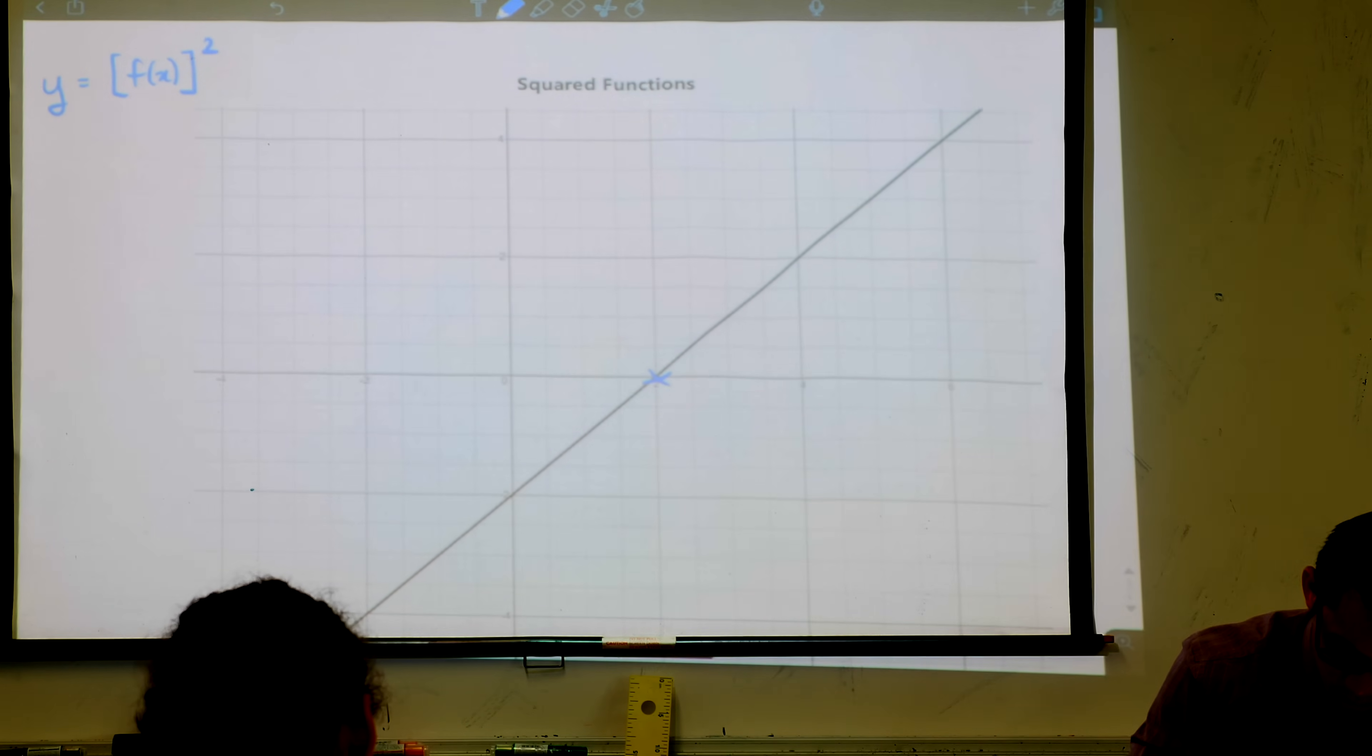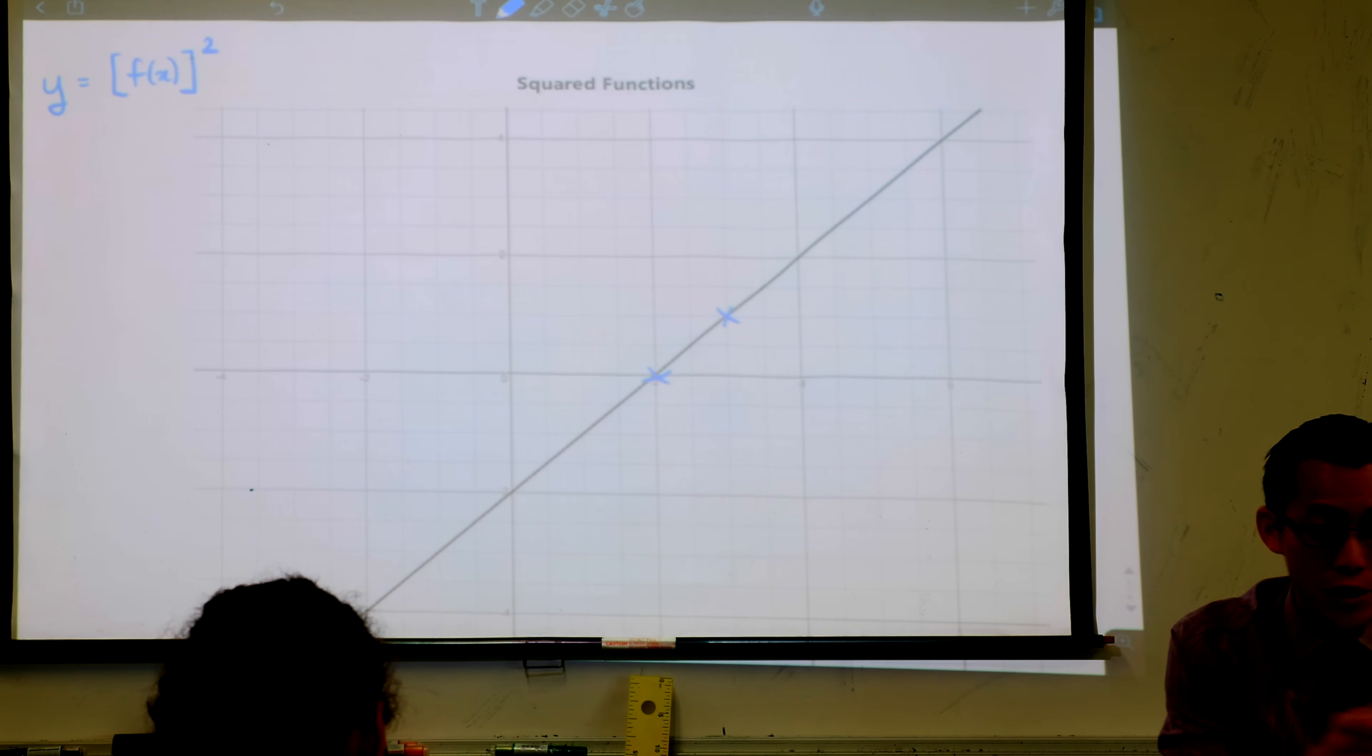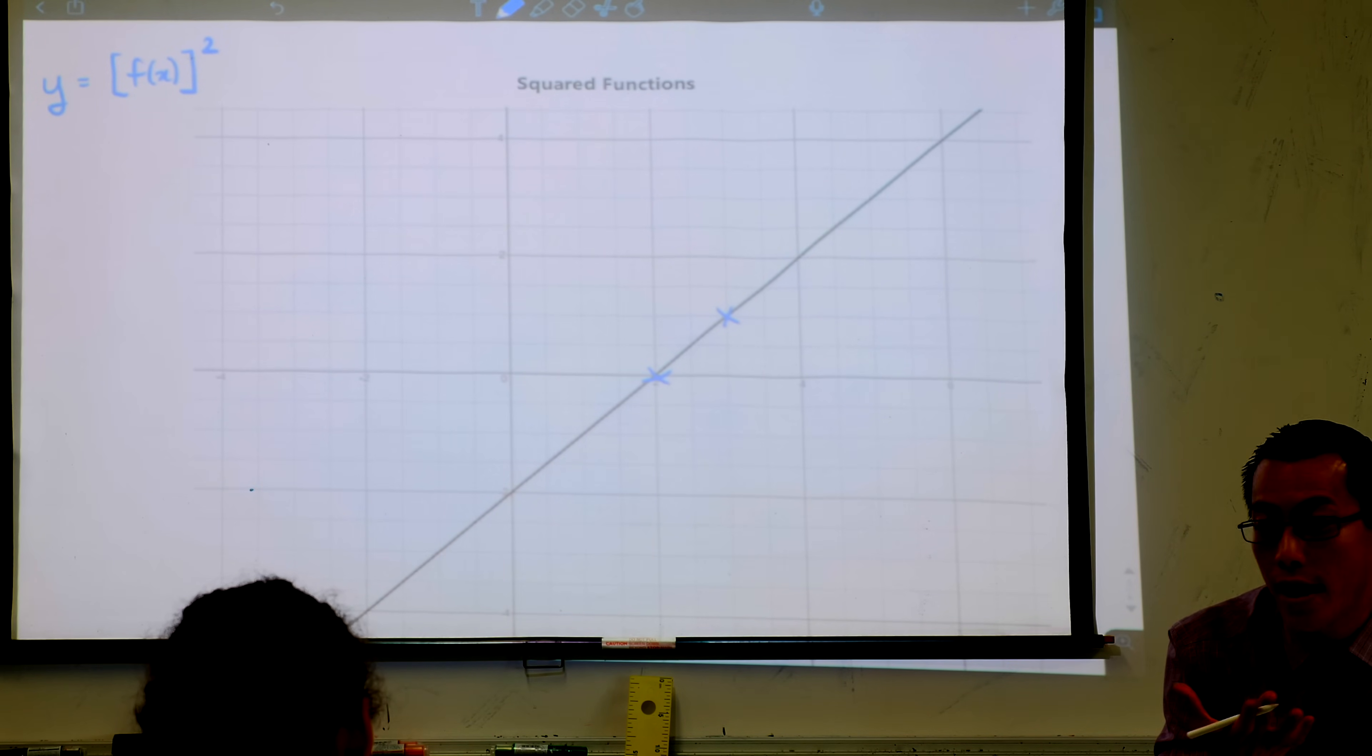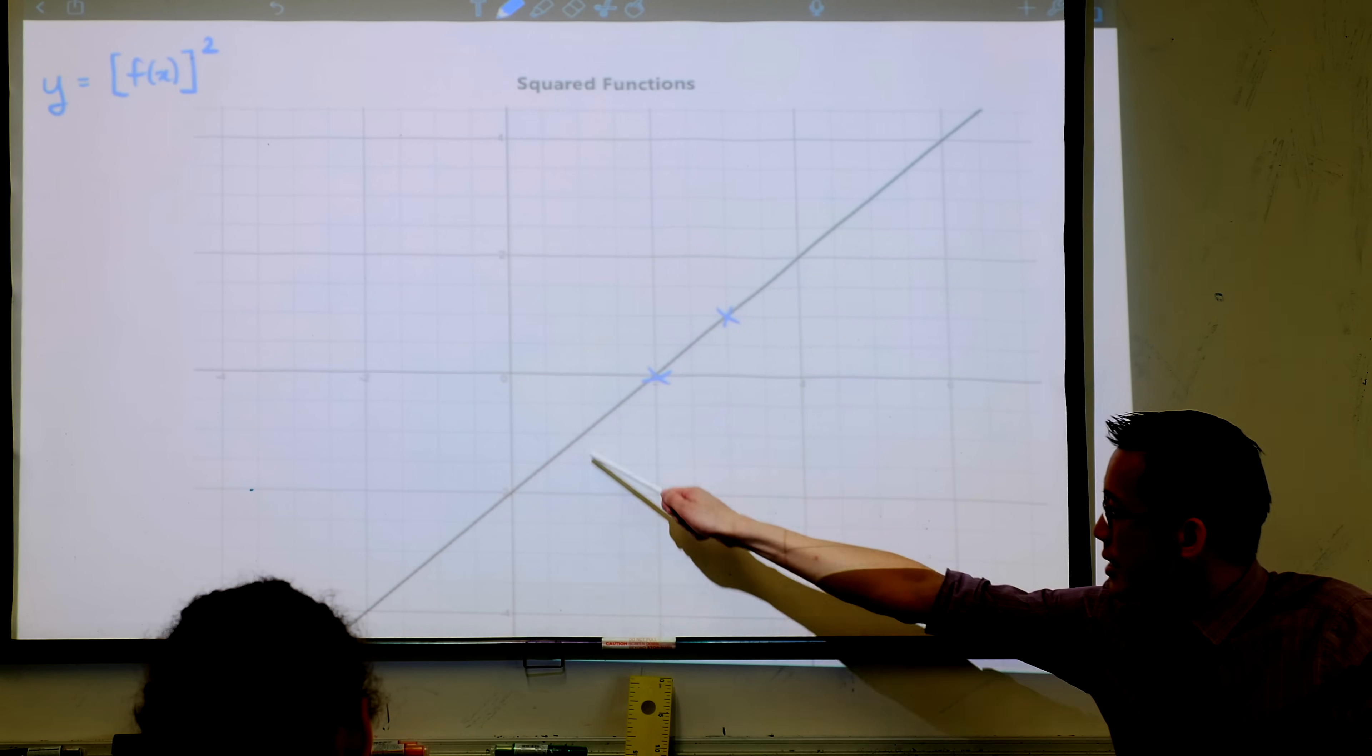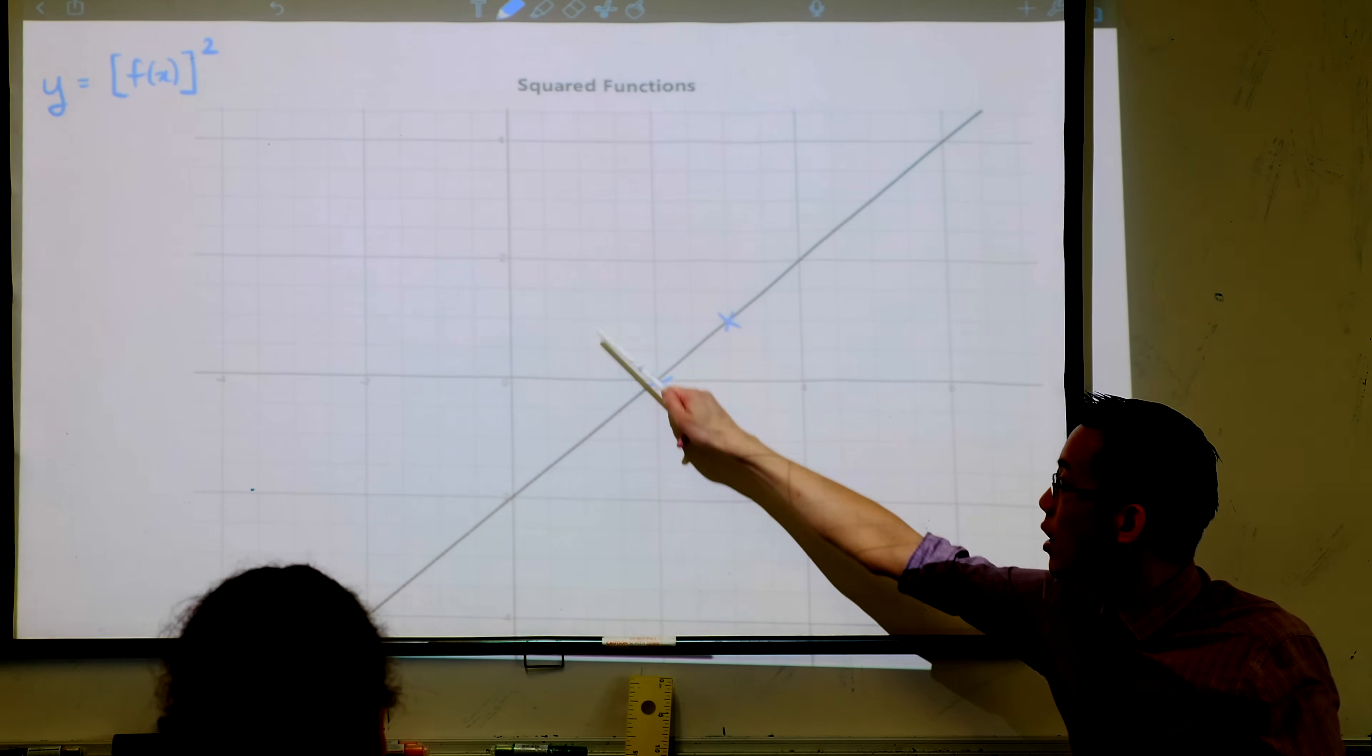Now another important point we looked at before was negative 1. The reciprocal of negative 1 is negative 1, but we're not thinking reciprocals right now. We're thinking about squares. The square of negative 1 is 1. So there's negative 1 down there. When I square this, it's going to become 1.